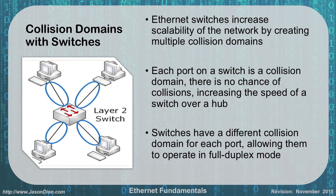When we deal with a switch, it increases our network scalability and performance by creating multiple collision domains. Every single port on a switch is its own collision domain. So on a switch, you can't have a collision — you're on your own port, they're on their own port. Because there's no chance of collision, we also get full duplex: we can talk and listen at the same time, because the switch handles each port independently. This gives you much more speed over a hub — no collisions, no rebroadcasting, and full duplex operation.